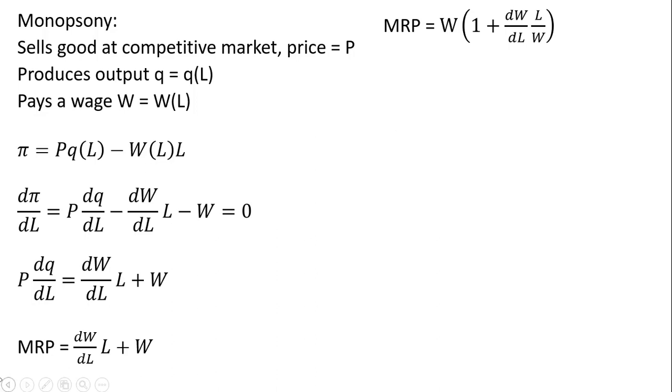Next, on the right-hand side, I factor out wage. W times 1 gives us this W, and W multiplied by the last term in parentheses gives us this result. The only trick here is this L, which I divide by W.